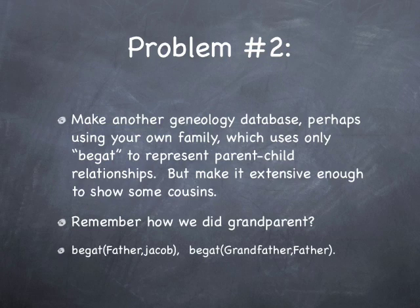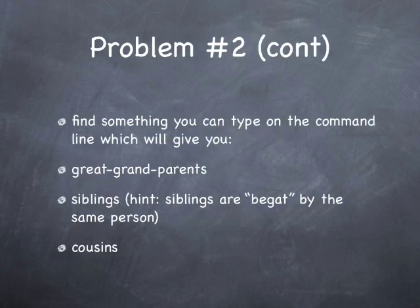For problem number two, make another genealogy database and send it to me — perhaps using your own family. Use just begat relationships to represent parent and child relationships; we're being completely gender-neutral, so mother and father are both represented as a begat relationship. Make it extensive enough to show some cousins — make it bushier than the linear one in the video. Using variables linked together, find a command-line query that gives you great-grandparents, siblings (hint: siblings are begat by the same person), and cousins.